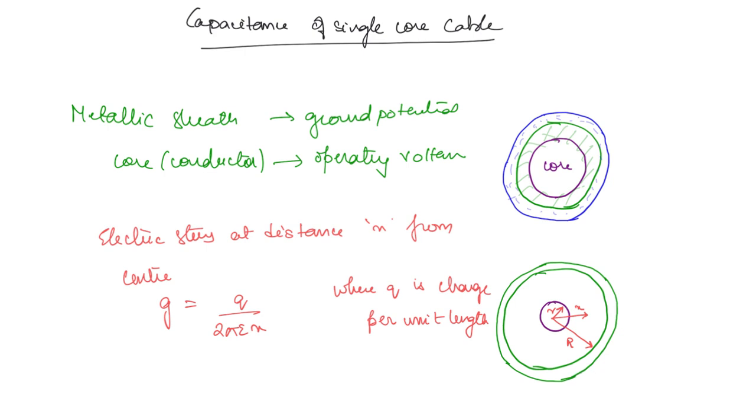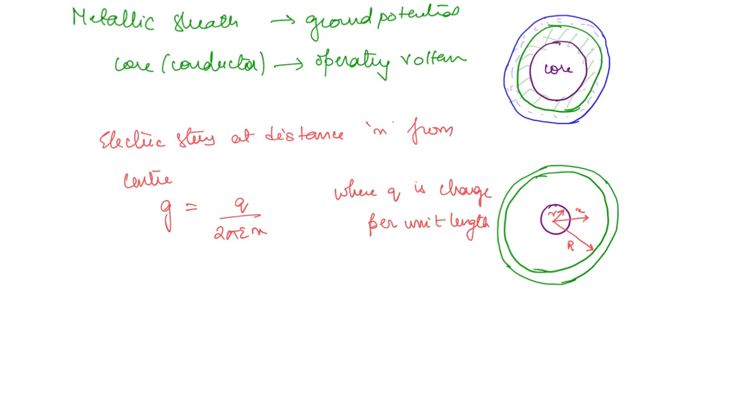It is nothing but the operating voltage, because the conductor is at the operating voltage and metallic sheath is at the ground potential. If you integrate you will get the operating voltage.